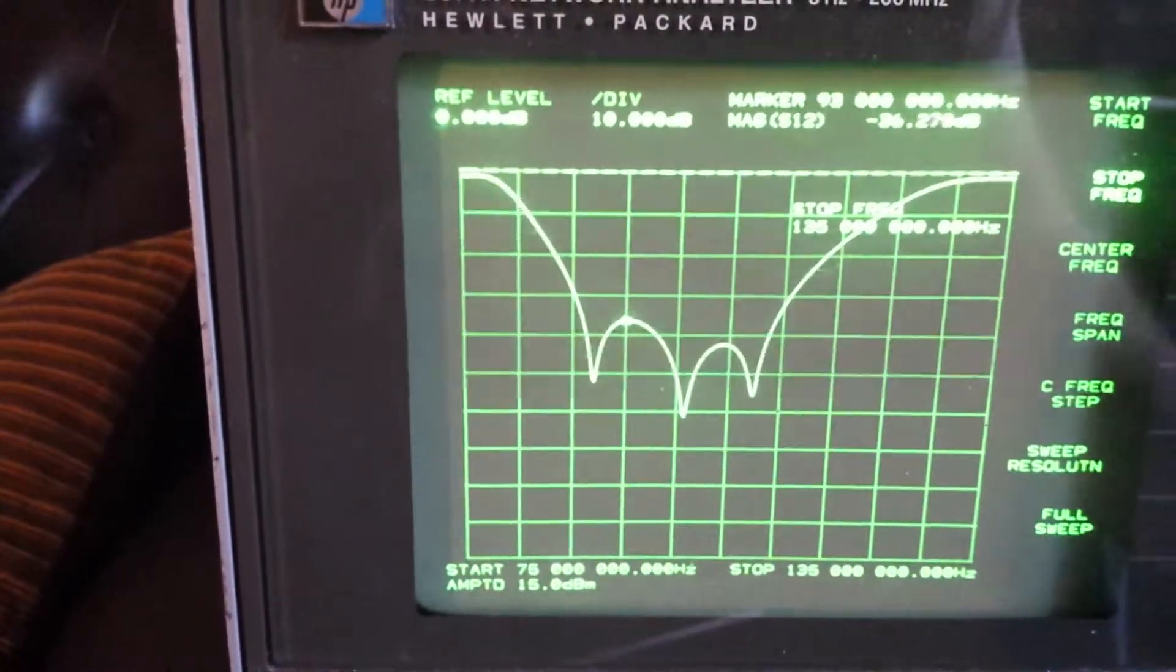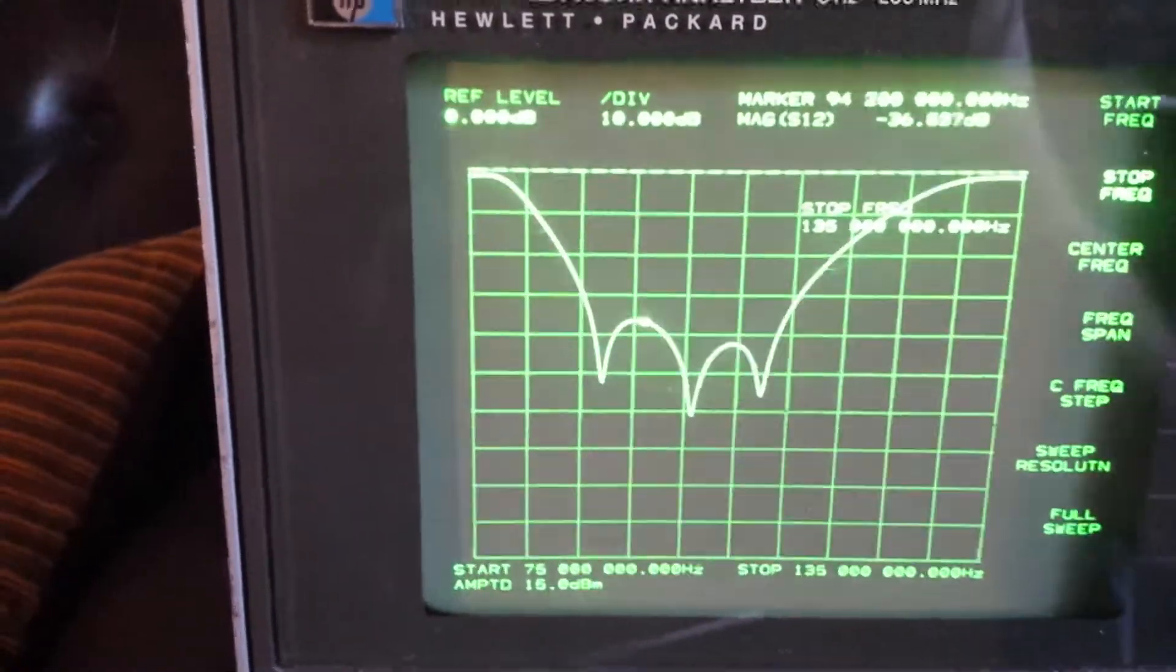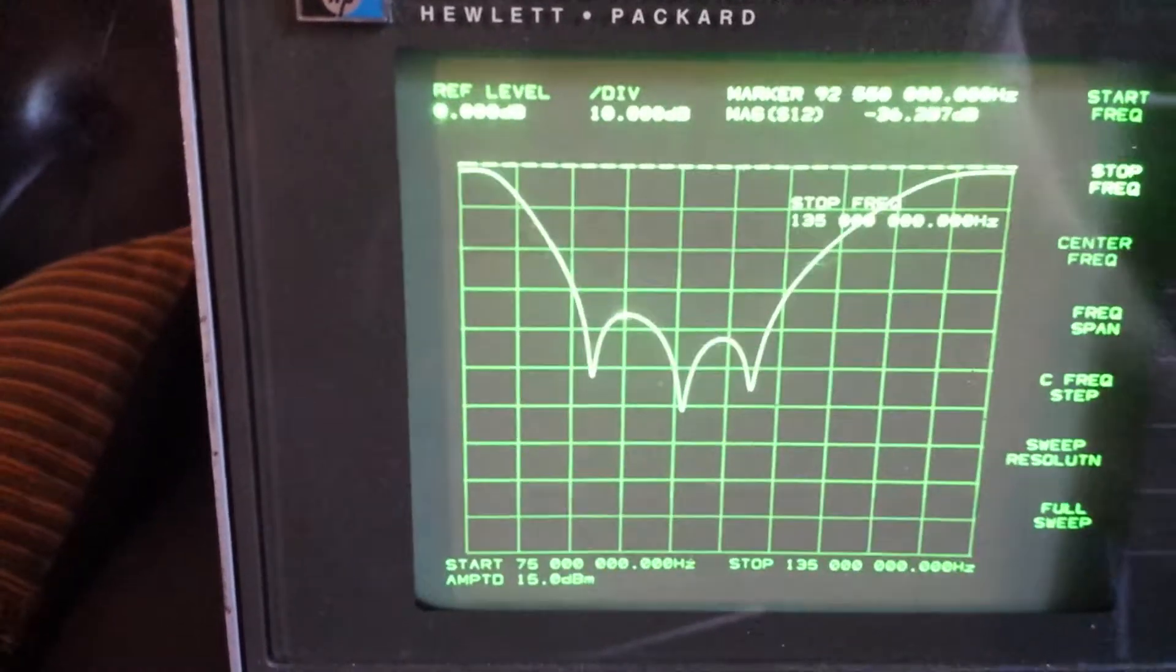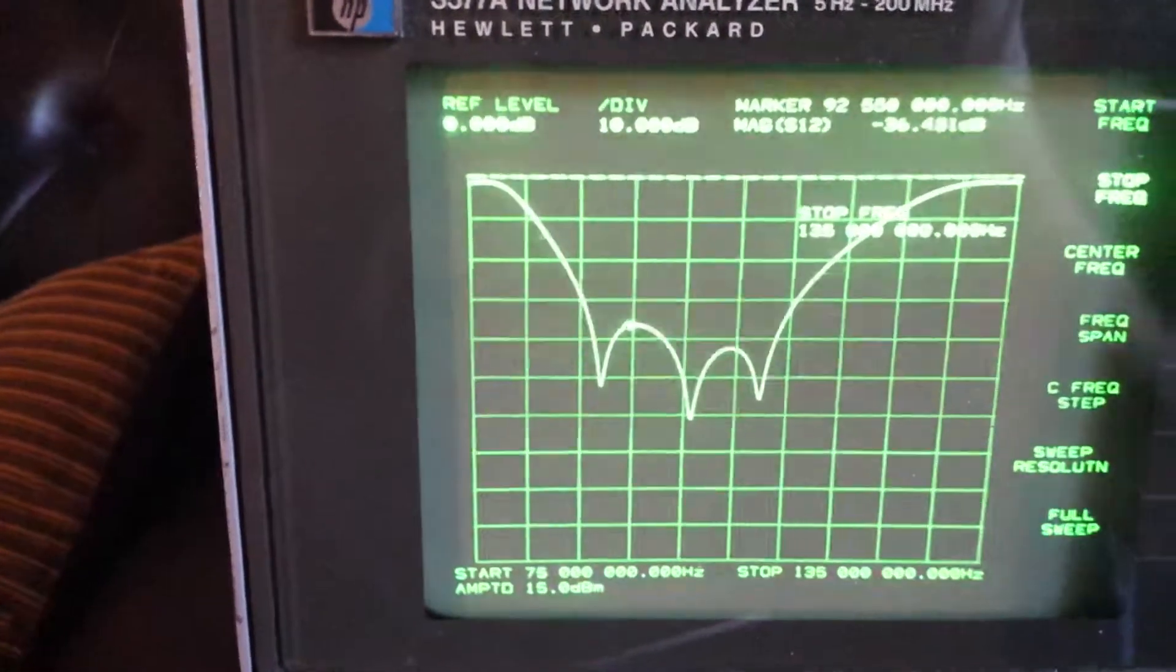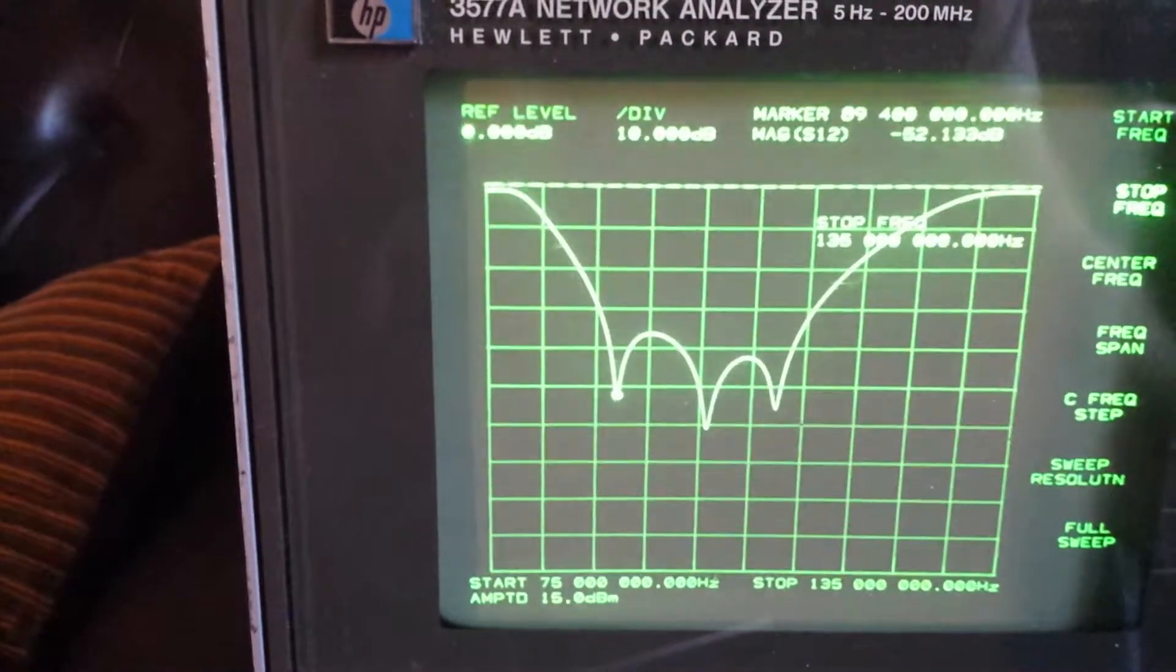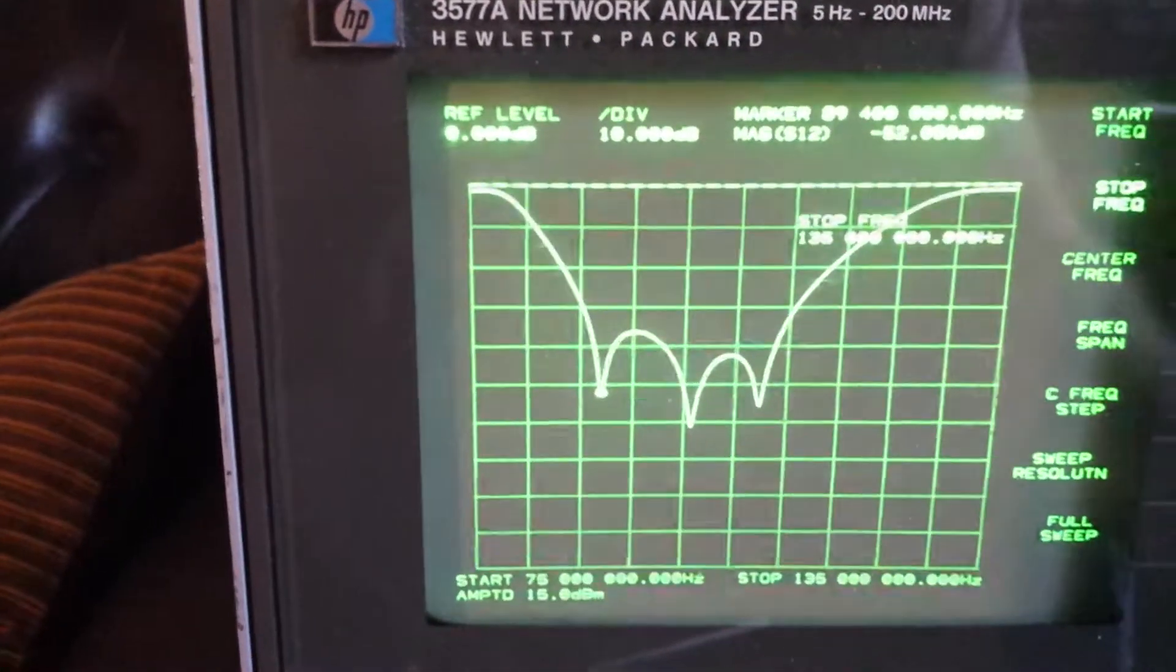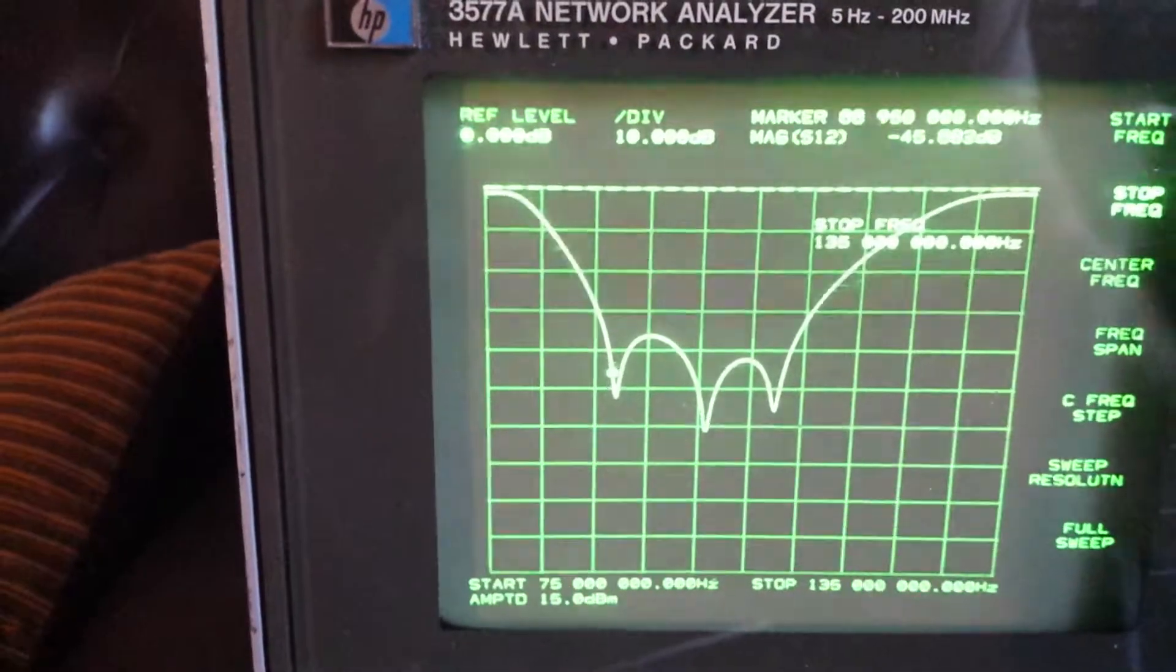It rolls up to right around 38, 37 dB here, right around 92.5 MHz. Another little attenuation peak here at 89 MHz.